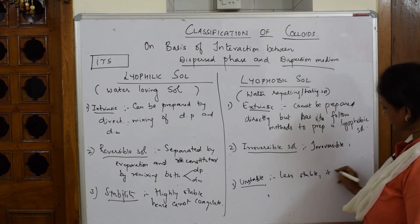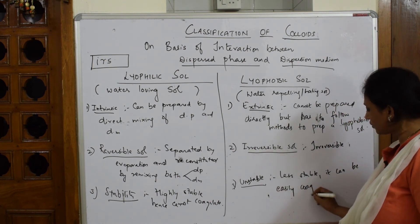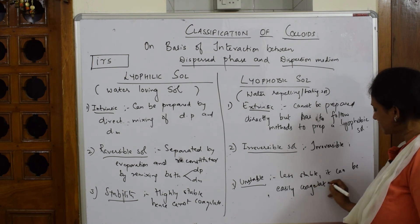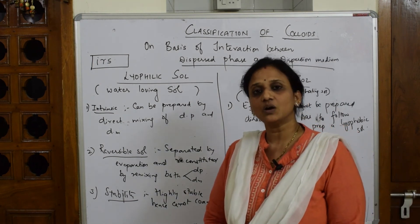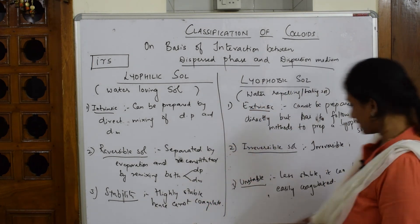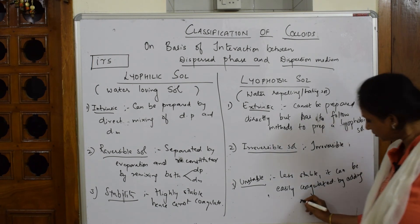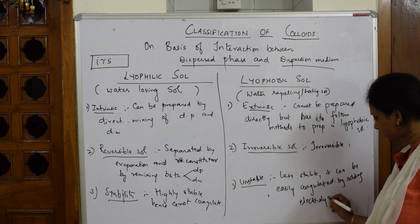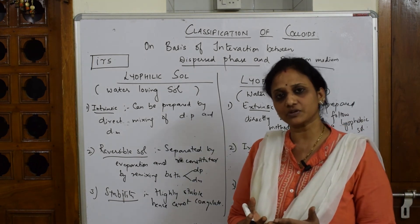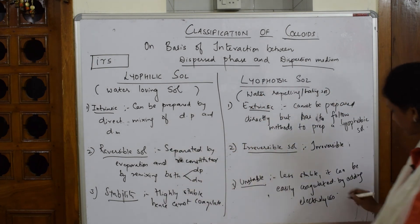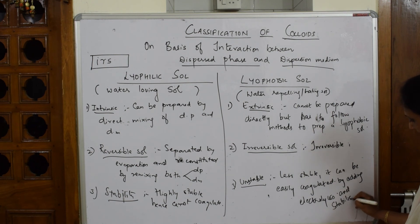Lyophobic sols are less stable, so they can be easily coagulated or precipitated. They can be easily coagulated by adding electrolytes of opposite charges. Once coagulated, you can also add stabilizing agents to stabilize that coagulated product.